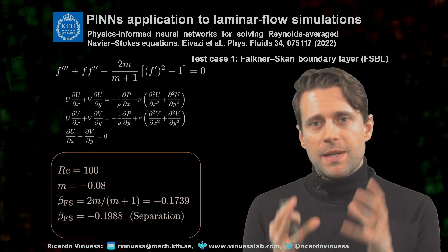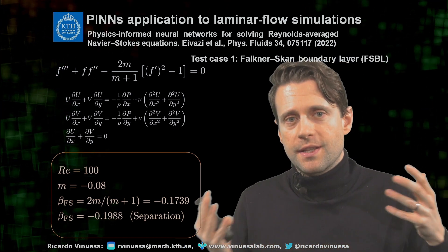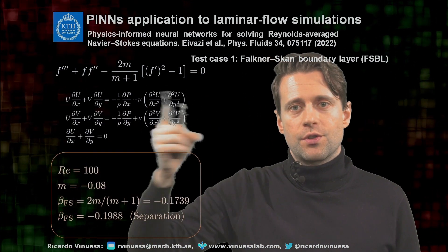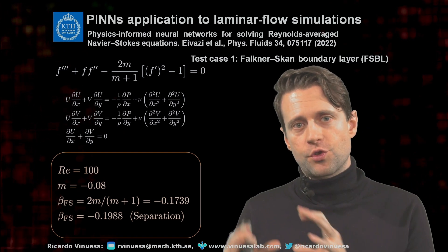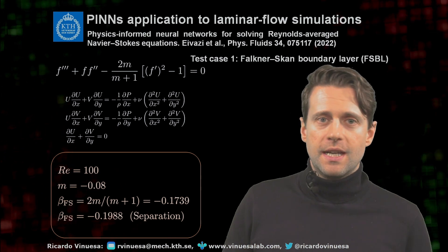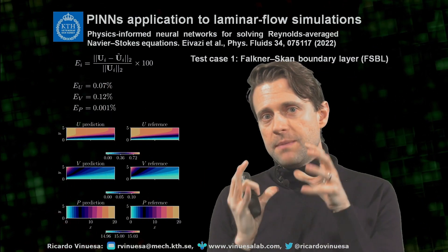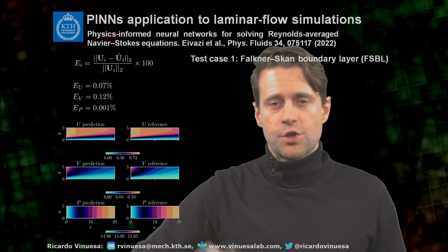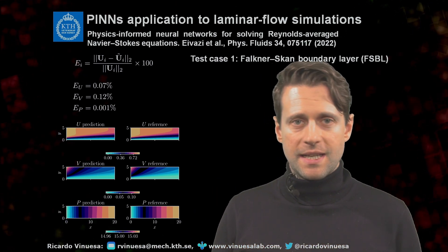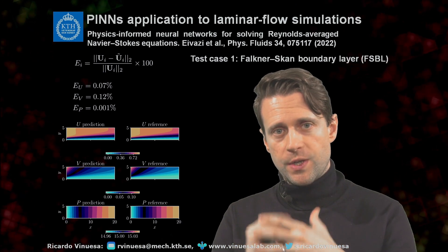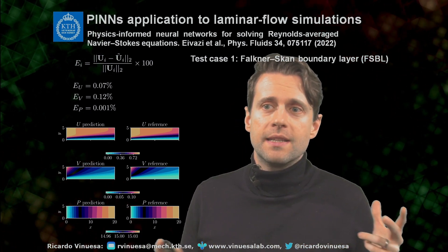Let's look at some application examples of this PINNs methodology. We start with the Falkner-Skan boundary layer — a very simple laminar pressure gradient boundary layer that can be solved in MATLAB in a few seconds. We want a sanity check to see if PINNs can solve a case without turbulence. We show the errors in u, v, and p — the mean velocities in the streamwise and wall-normal directions, and the pressure. The errors are less than 0.1%, which is a quite reassuring proof of concept. We then move to progressively more complicated cases to see what happens with turbulence.